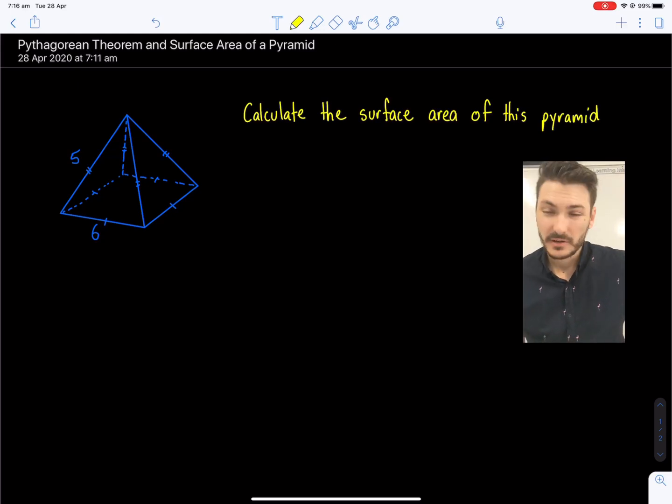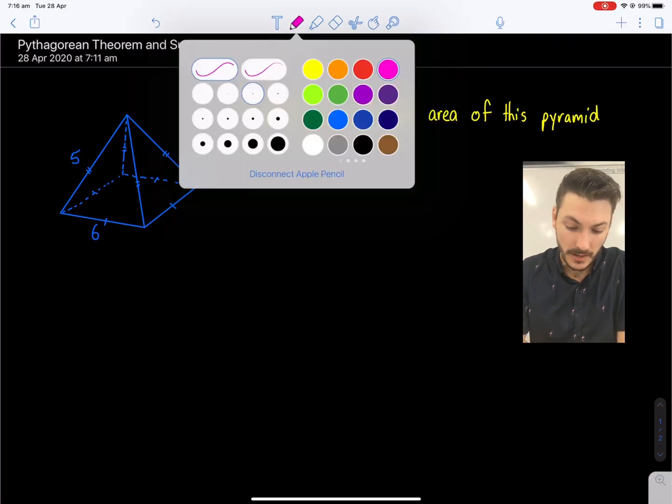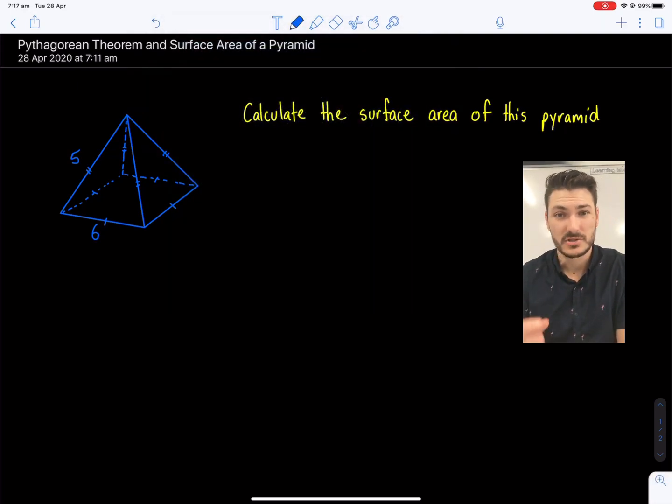So in order to calculate the surface area of this, typically we would break up our shape into its many faces, calculate the areas individually, and then add them all back together. Pretty simple. However, if I think about drawing one of these triangular faces, I'm going to get a triangle that looks something like this.